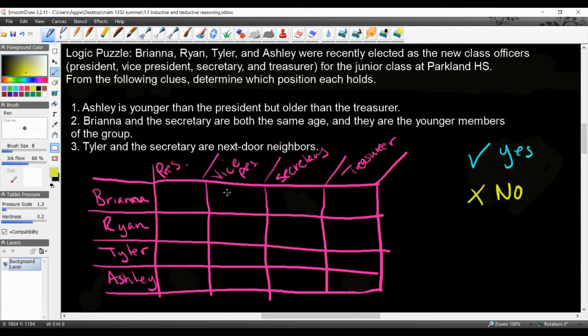So we're going to go ahead and read the clues and fill out this chart to try to figure out who got what position. The first clue says that Ashley is younger than the president but older than the treasurer. So right away, that tells me that Ashley is not the president. Here's Ashley. She can't be the president because she's younger than them, and she can't be the treasurer because she is older than them.